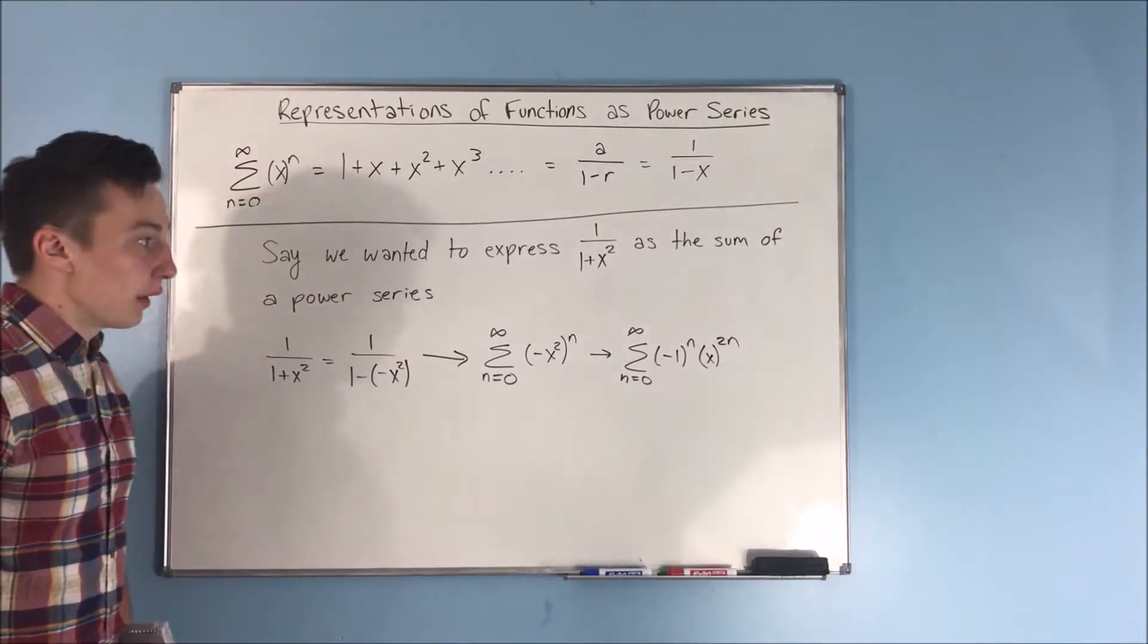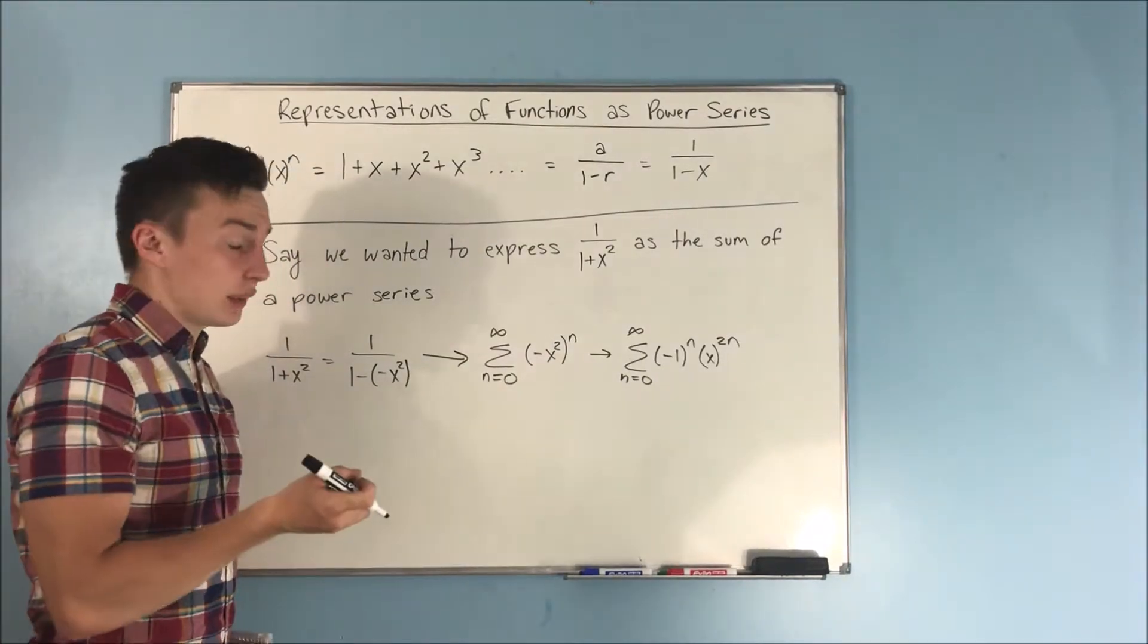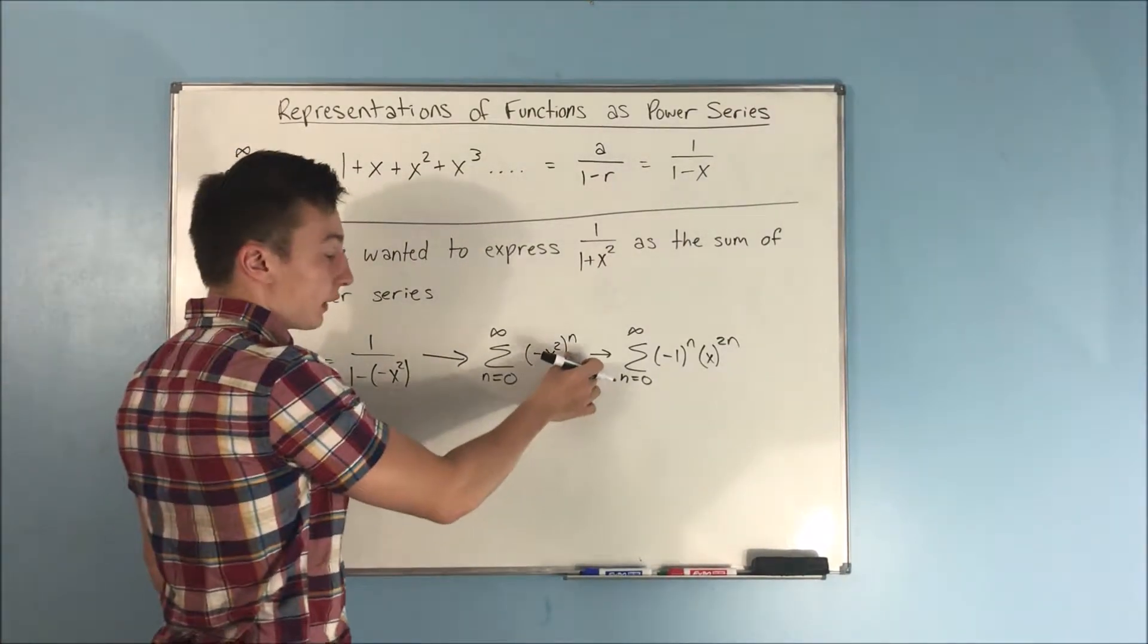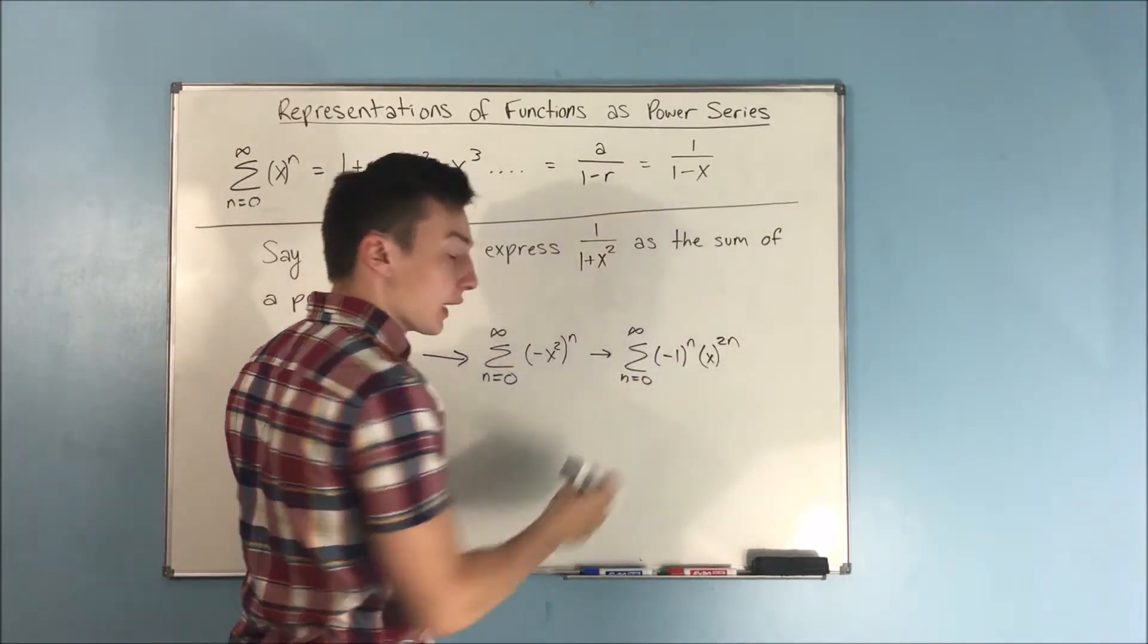All right? I did a couple steps there at once, so let me just kind of go over what I did. I pulled that negative 1 to the n out. And then I was left with an x squared to the n. And that's just the same thing as saying x to the 2n.